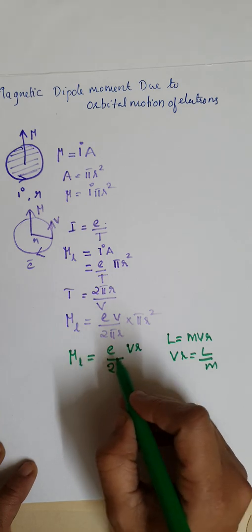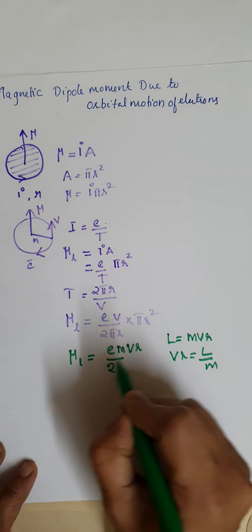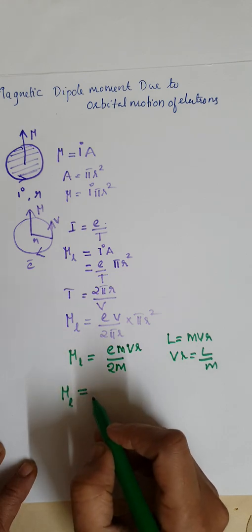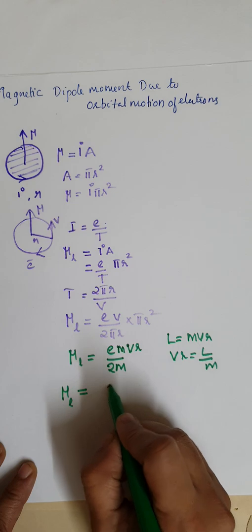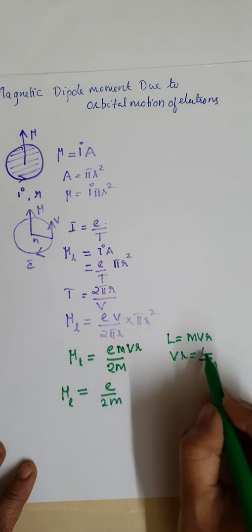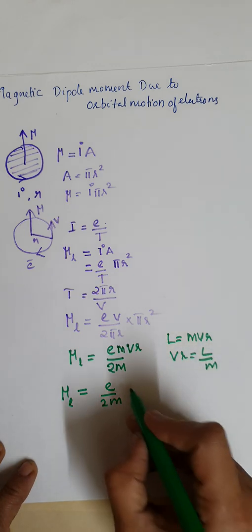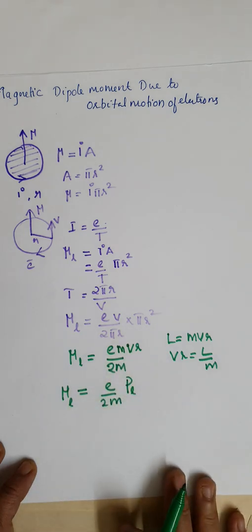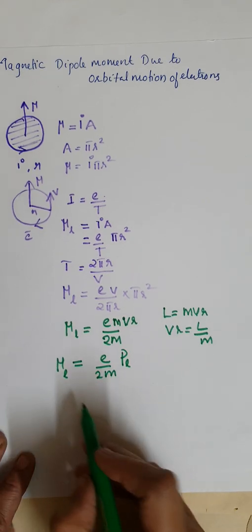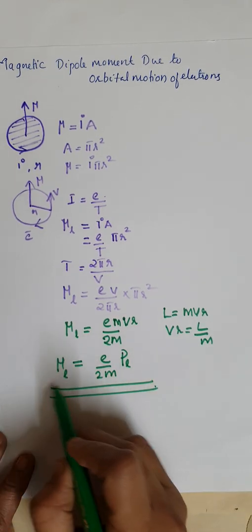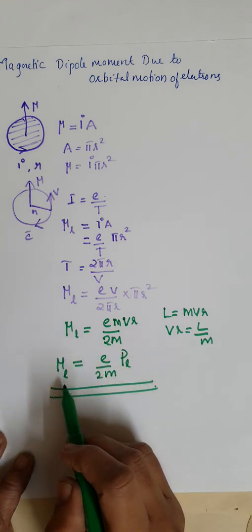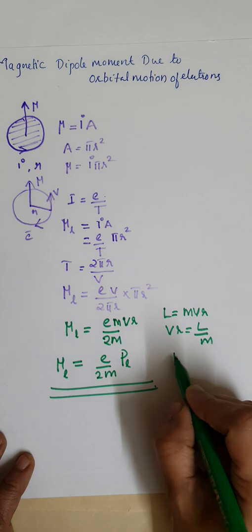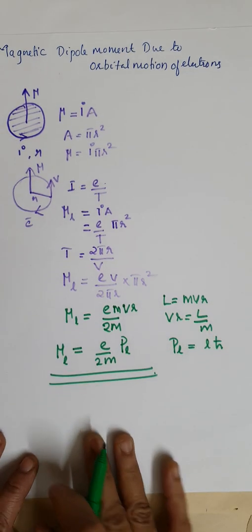Multiplying and dividing by M, we get that mu L, the magnetic dipole moment due to the orbital motion, is equal to E divided by 2M into the angular momentum. We represent this orbital angular momentum as P_L. The orbital angular momentum P_L is quantized and can be represented as L times h-bar, or L times h divided by 2 pi, where L is the orbital angular momentum quantum number.